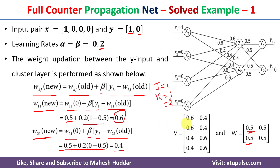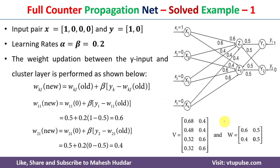Now I replace the old weights for the first cluster with the new weights. These are the updated weights once we map the input pair to one of the clusters. In a full counter propagation net, we first map the given input pair to one of the clusters, and then the weights associated with that cluster are modified using the given formulas. I hope the concept of full counter propagation net is clear. If you like the video, do like and share, press subscribe for more videos.